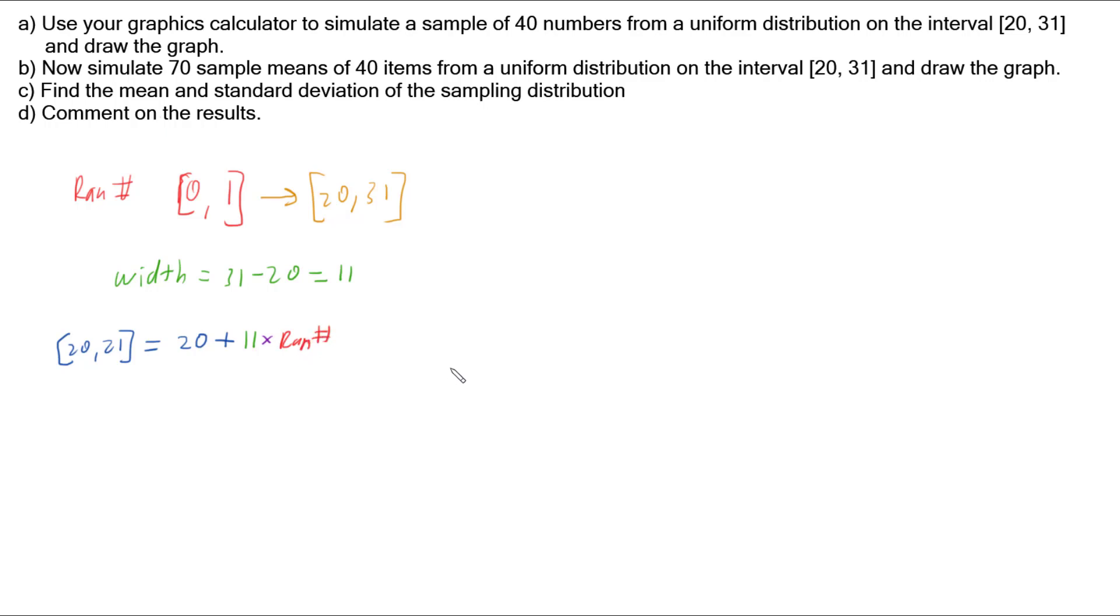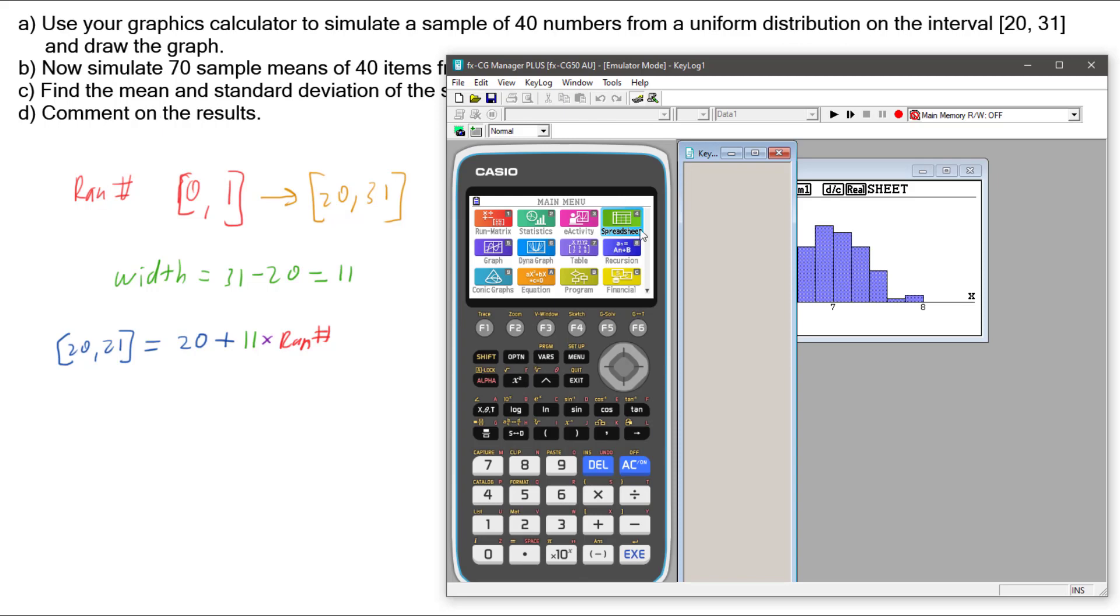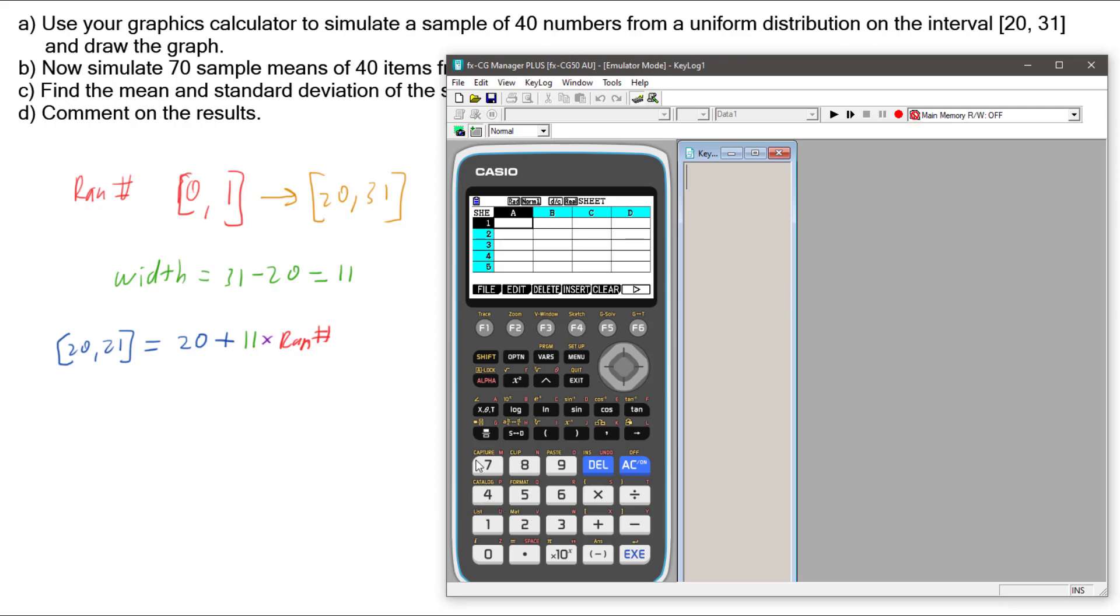Our overall number to get a number in the range from 20 to 31 is 20 plus 11 times the random number between 0 and 1. Let's put this into our Graphics Calculator, and we want to do it 40 times. I'm going to use the Spreadsheeting function, so let's go to the Spreadsheet function, and down column A, I'm going to do our 40 numbers for our first sample. We've got to type in the rule, so I'm going to go shift equals to start up a rule, and type in 20 plus 11 times by a random number. To get our random number, I'm going to go to options probability, then Rand, and we've got our different random numbers, we just want a random number.